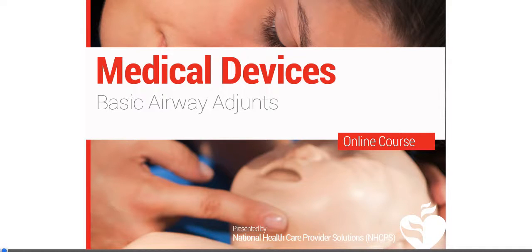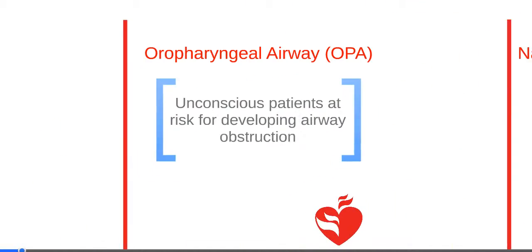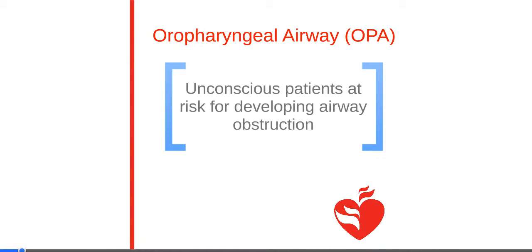In this section, we'll go over the steps of inserting basic airway adjuncts. The first basic airway adjunct is a device called an oral pharyngeal airway, or OPA, and it's used in unconscious patients who are at risk of developing airway obstruction.